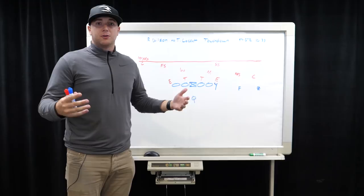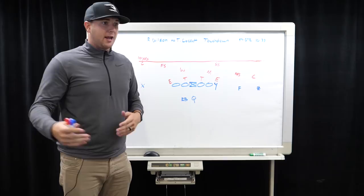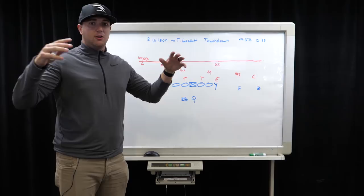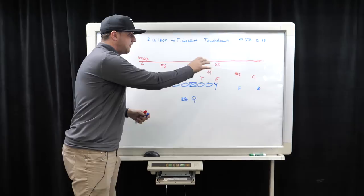So as we walk up to the line of scrimmage here, what Russell is doing is he's looking at the shell of the coverage. And what I mean by shell is the corners, safeties. He's looking at the defensive alignment so that he can determine what kind of coverage we're facing here.